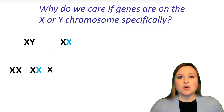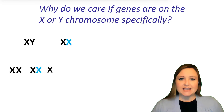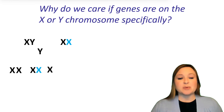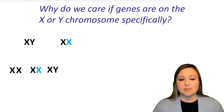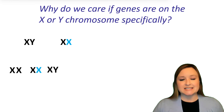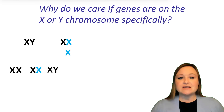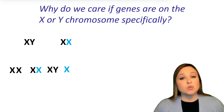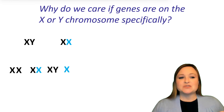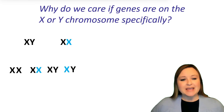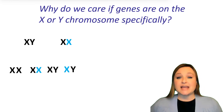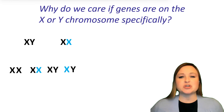Here's our third scenario: an egg with the normal X from the female is fertilized by a sperm carrying the Y chromosome from the male. So we'll have an XY individual with an X chromosome that doesn't have the mutation. And the final scenario is that the egg with the mutated X is fertilized by a sperm carrying a Y from the male, and so we end up with an XY individual — which is male — who has the X chromosome with the gene with the mutation.